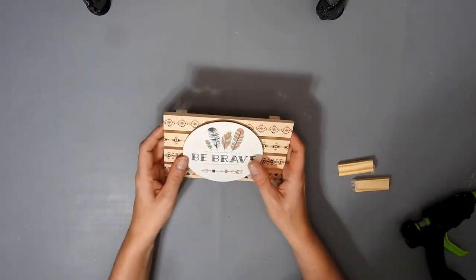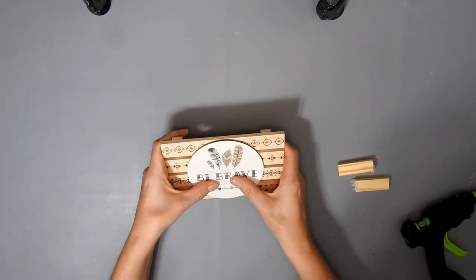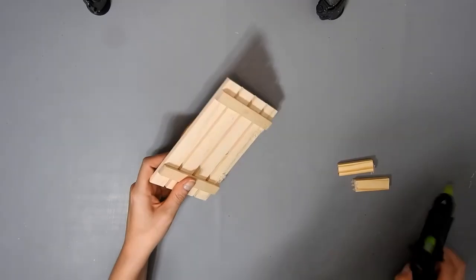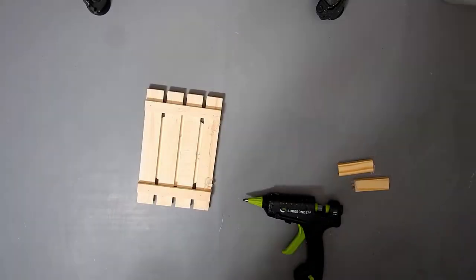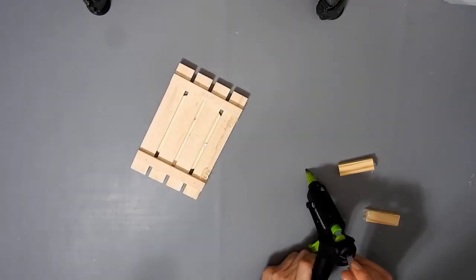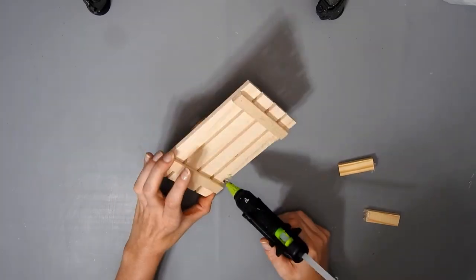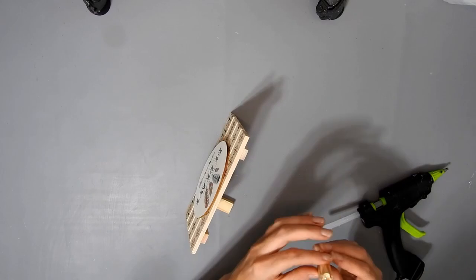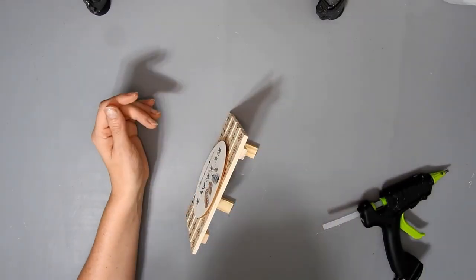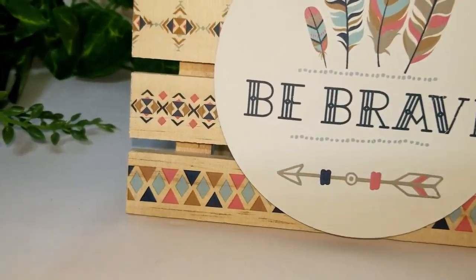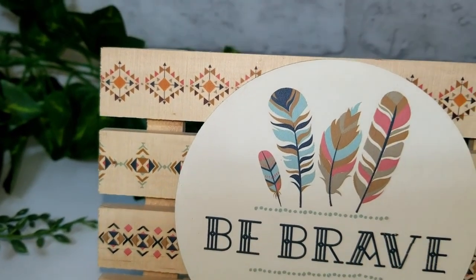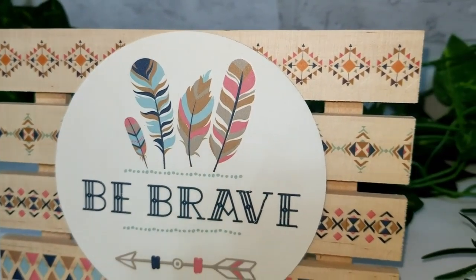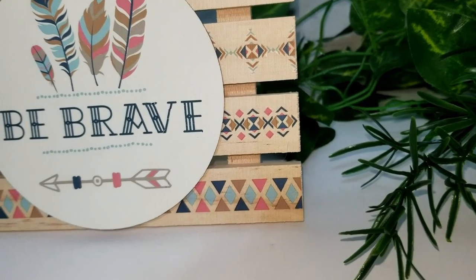I'm just using my hot glue gun to attach the circle to the front. Then I'm going to attach two table blocks to the back. If you wanted you could put some twine and some beads to make a hanger, that would look pretty. But I wanted to have a stand inside. This is how it turned out. I think this might be my favorite DIY of the video. It just turned out so pretty.